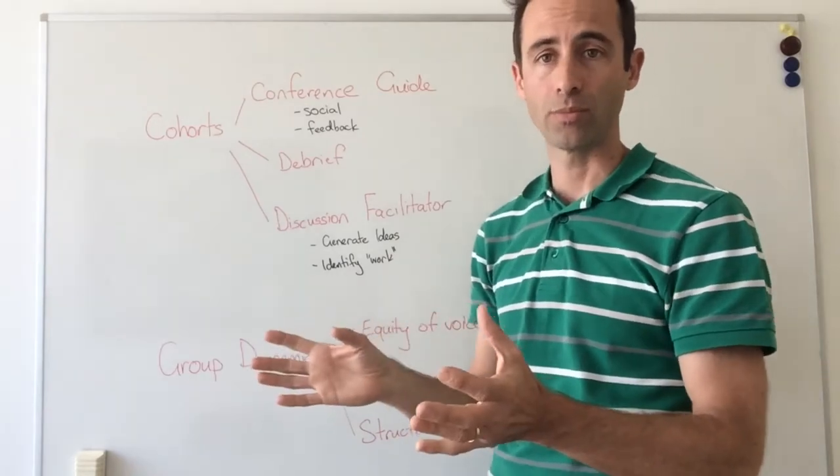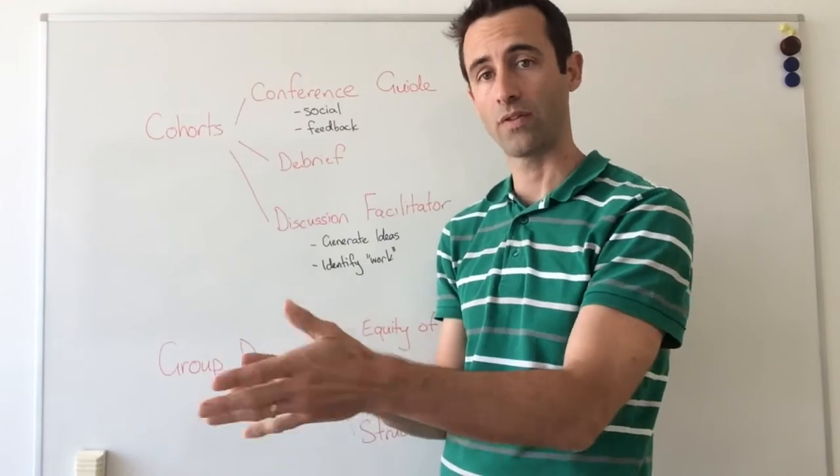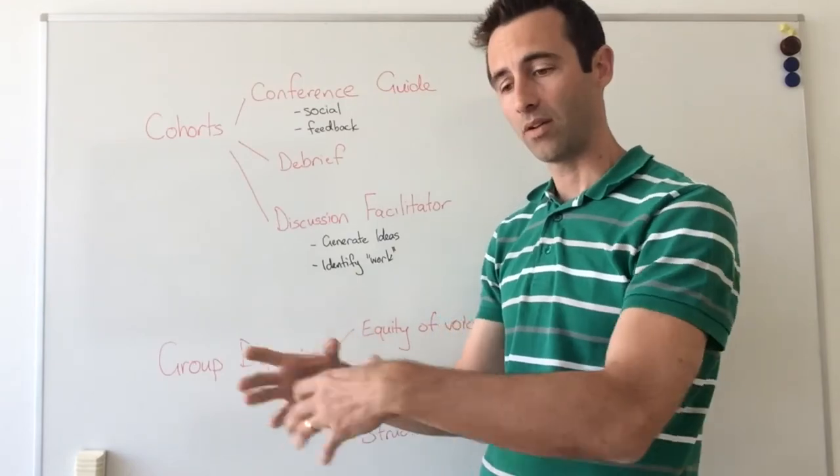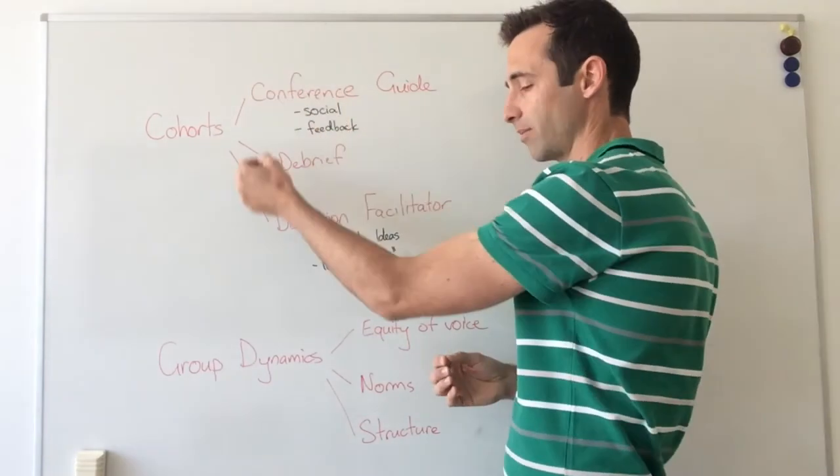Then they pair up or form triads, and they discuss their burning issues, and they narrow it down to two to three issues for that group. Then all the groups come together and share their ideas, and the cohort leader writes them down on the board.